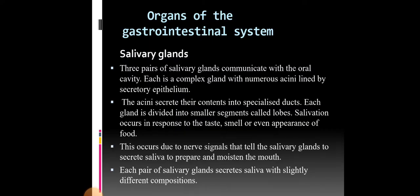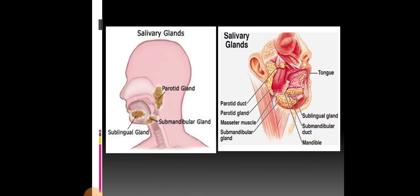The next topic is the organs of the gastrointestinal system. The first organ is the salivary glands. Three pairs of salivary glands communicate with the oral cavity. Each is a complex gland with numerous acini lined by secretory epithelium. The acini secrete their contents into specialized ducts, and each gland is divided into smaller segments called lobes. Salivation occurs in response to the taste, smell, or even appearance of food, due to neural signals that tell the salivary glands to secrete saliva to prepare and moisten the mouth. Each pair of salivary glands secretes saliva with slightly different compositions.